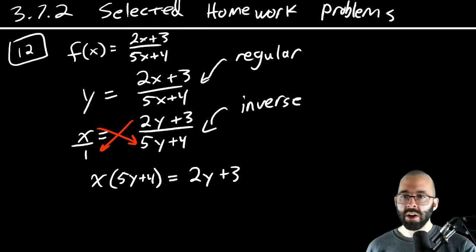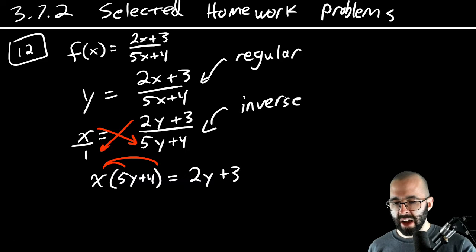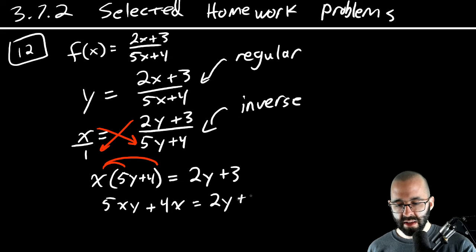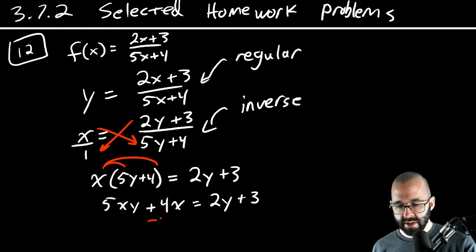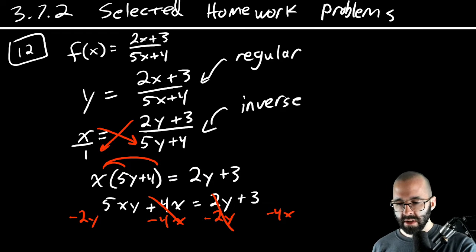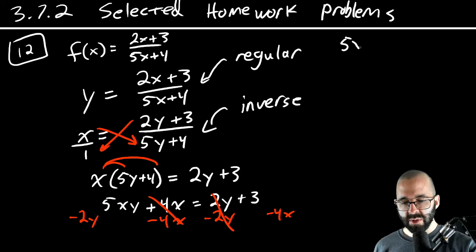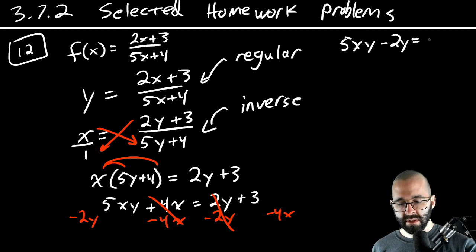Now we need to distribute, get all the Y's together, get everything else on the right. If we distribute, that's going to give us five XY plus four X. And we need to get that Y over. So now the Y needs to go over here and the X needs to go over there. Subtract four X from both sides and also subtract two Y from both sides. When we do that, we're going to have five XY minus two Y on the left and three minus four X on the right.